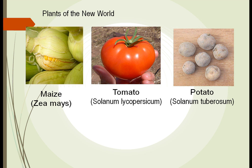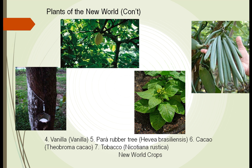Looking at the New World — North and South America — what plants were here 10,000 years ago: we had corn from Central America, which didn't look like what you see today. We see the tomato, the potato, vanilla beans, the rubber tree, and cocoa.